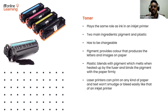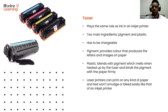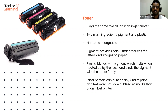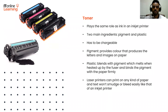The toner in the laser printer plays the same role as ink in an inkjet printer. However, it's more than just ink — the powder has two main ingredients: pigment and plastic. The toner also has to be chargeable. The pigment provides the color that produces the letters and images on paper; for black and white, black pigment is used. The pigment is then blended with plastic particles, which melt when heated up by the fuser and bind the pigment with the paper firmly. This means that laser printers can print on any kind of paper, and the text won't smudge or bleed easily like that of an inkjet printer.